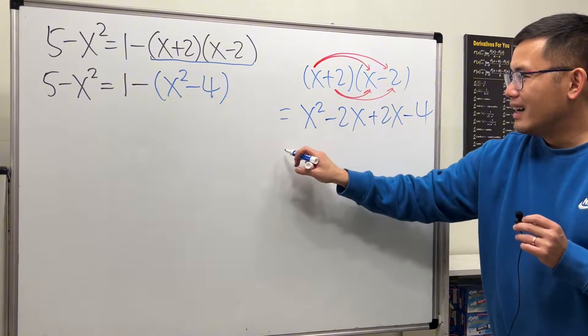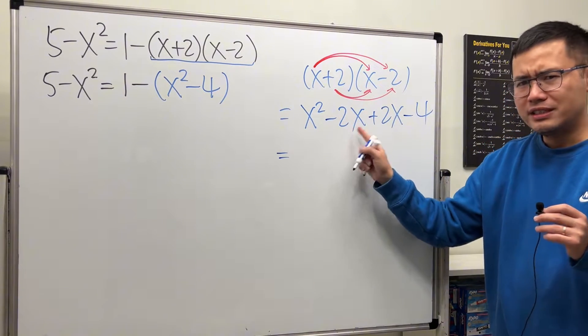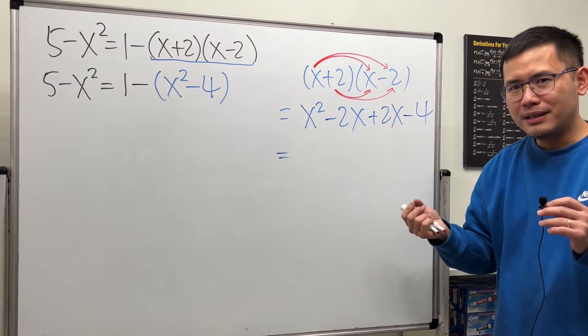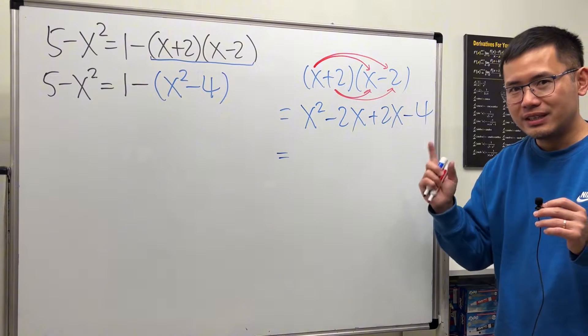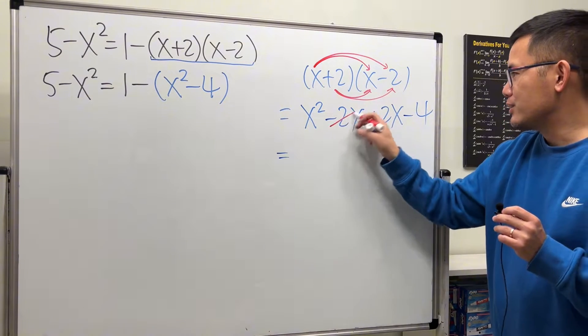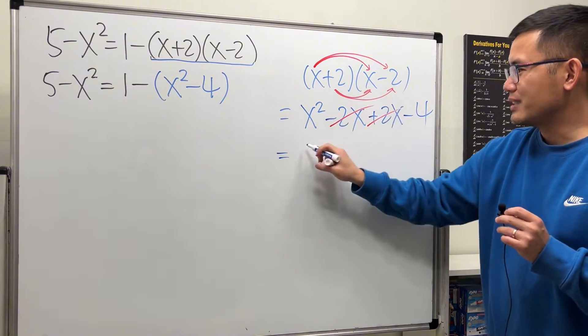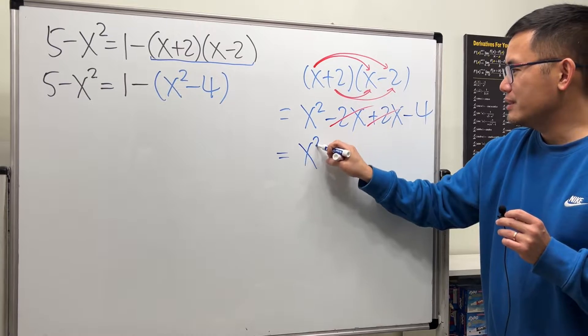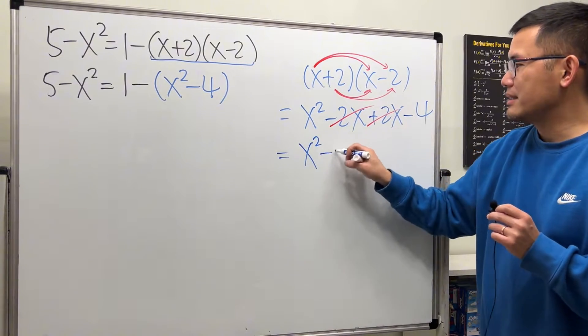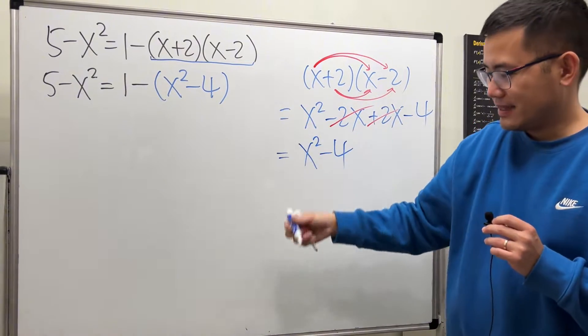Notice the negative 2x and positive 2x can be combined, and they cancel to give 0. So we just get x squared minus 4. That's how we get that result.